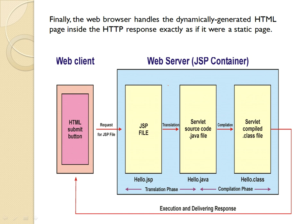Once again, we can see how this process works inside the JSP container or web server. Initially, the HTML submit button is pressed and a request for the JSP file is sent. The JSP file is translated into a servlet source code .java file. Then the JSP engine compiles it into a servlet .class file, which is further processed by the servlet engine, delivering the response back to the client. The translation phase converts JSP to Java, the compilation phase converts .java to .class, and after that it is executed. This is the architecture of how a JSP page is processed.